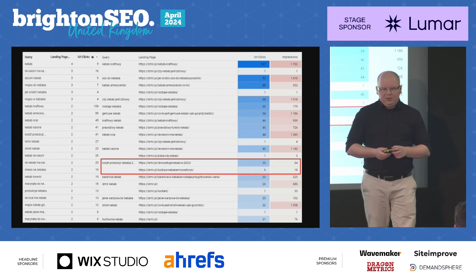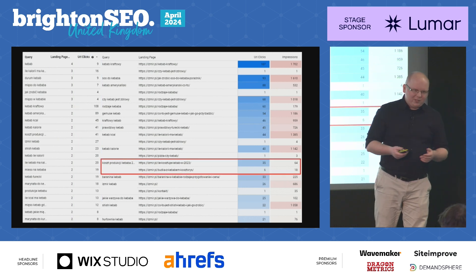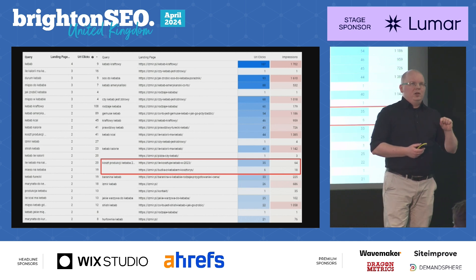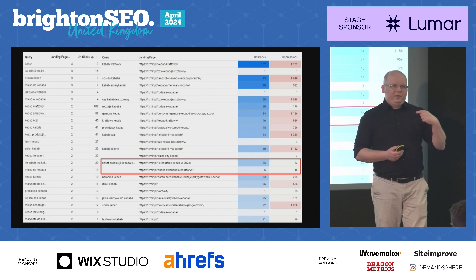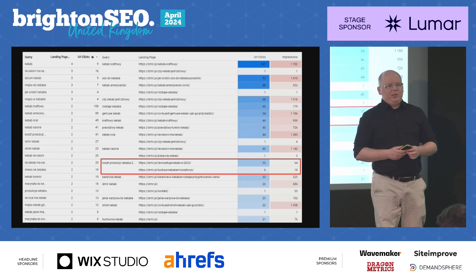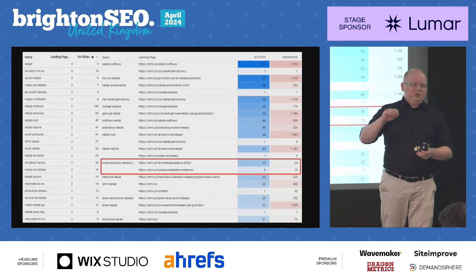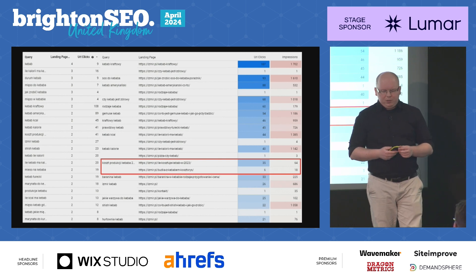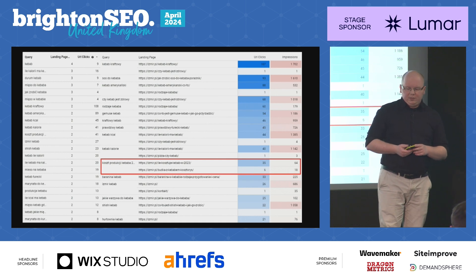The second table is a pivot table where you can see which specific URLs are fighting for position for a specific keyword. From that point, I would export the data to Google Sheets and add annotations about what we need to do with specific URLs to deal with the cannibalization.